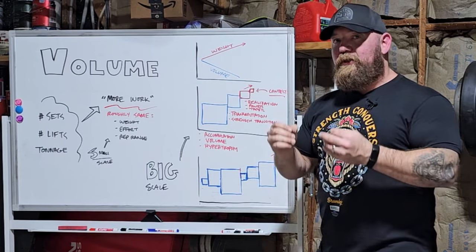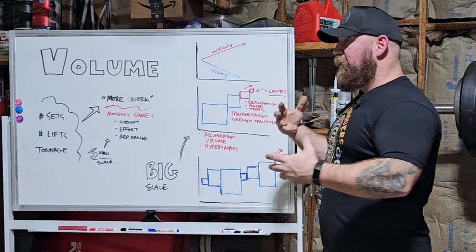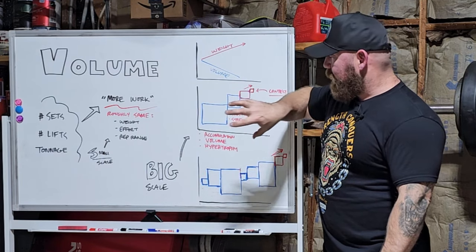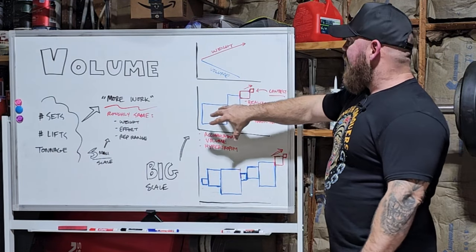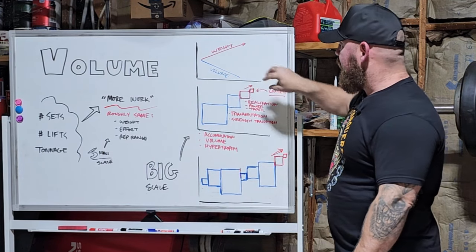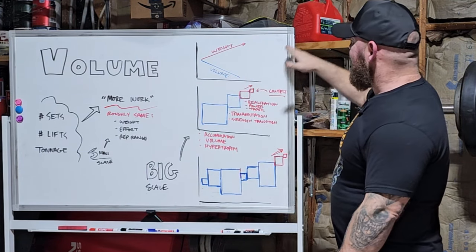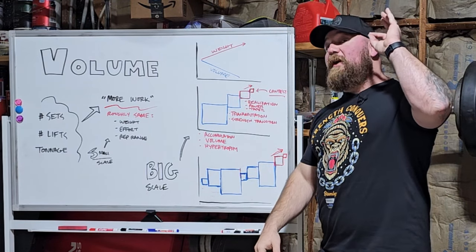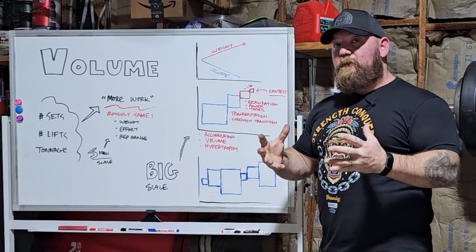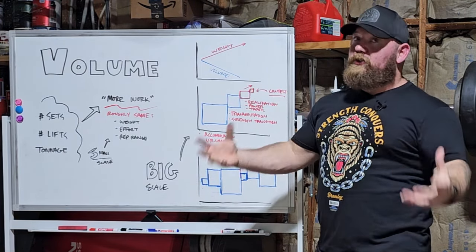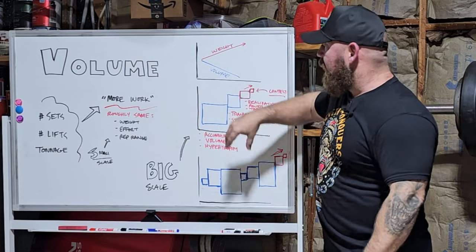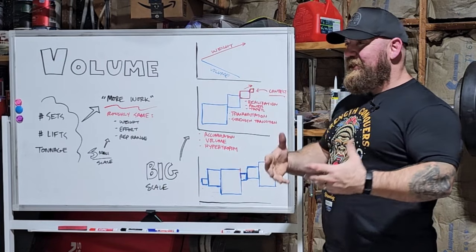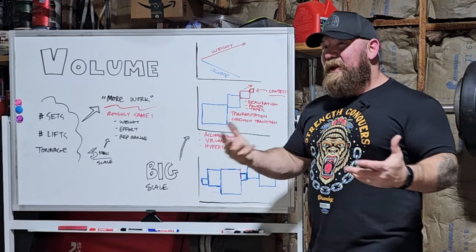Generally, classical linear periodization — which not many people do in its pure simplified form anymore, even though we still talk about it — is like starting very light percentages with a ton of work, and then every increase in weight is met with a reduction in volume. It's this nice linear straight line all the way up to the contest peak, where weights are very high, the nervous system is dialed in, you're comfortable under heavy weights, but you're so recovered from all that prior work that fatigue dissipates and you get strong. It's a great model.